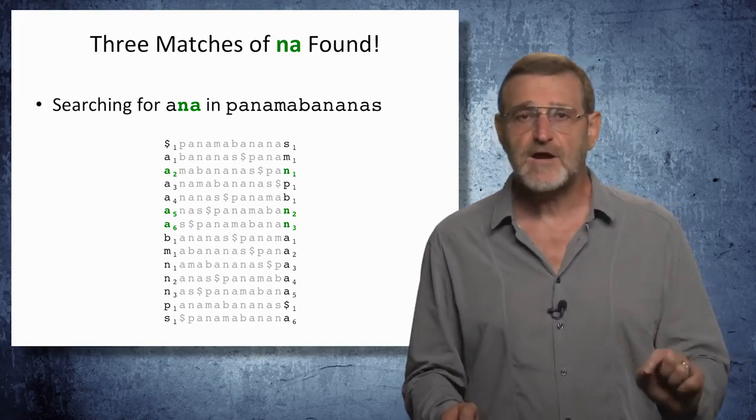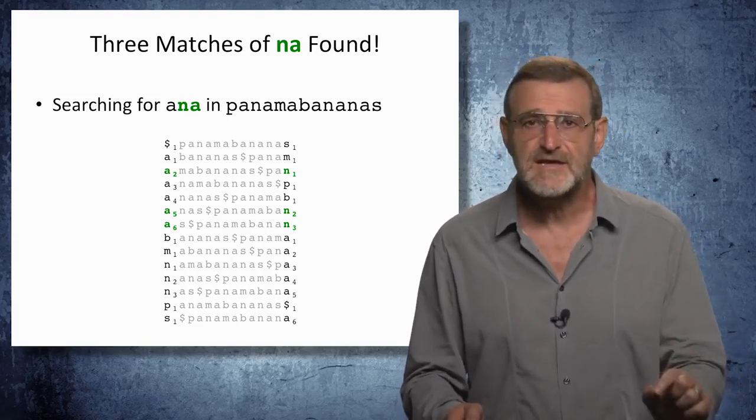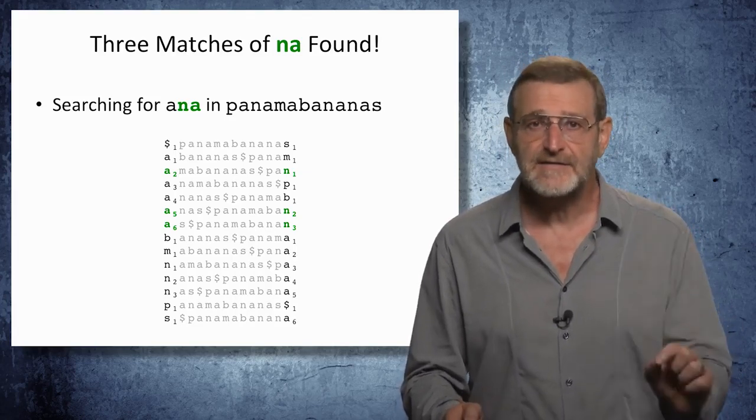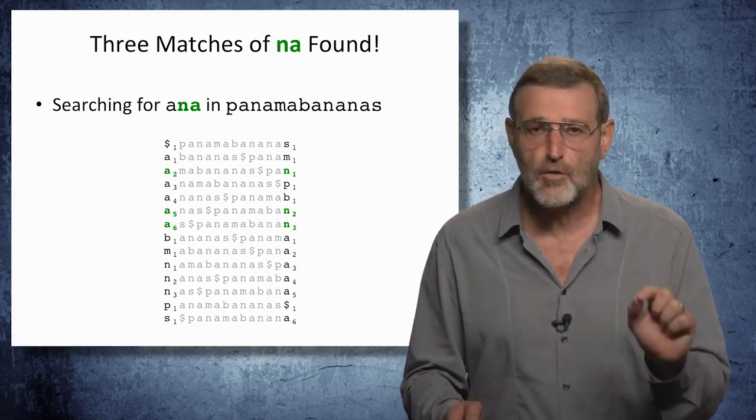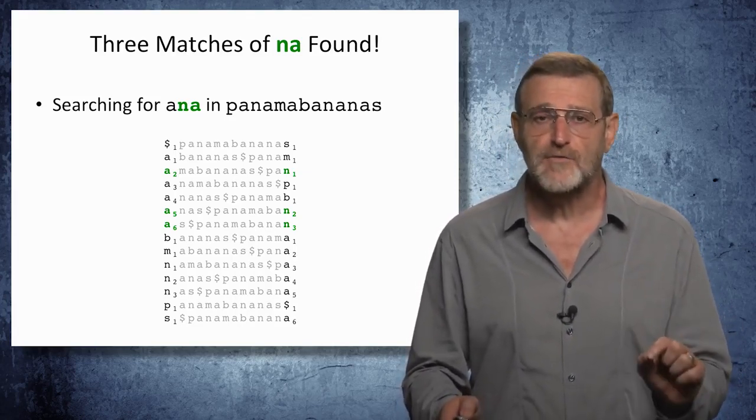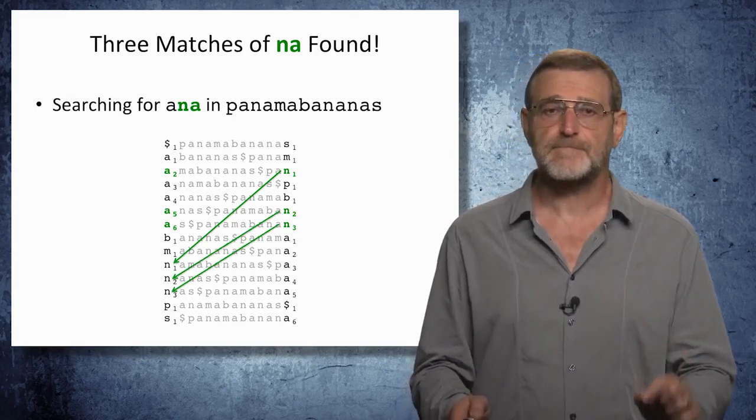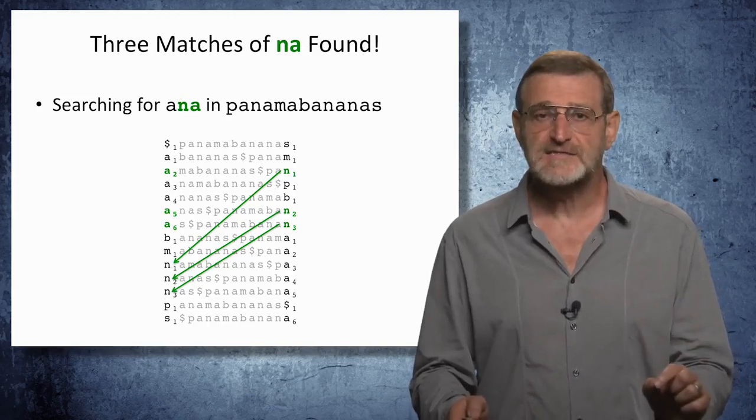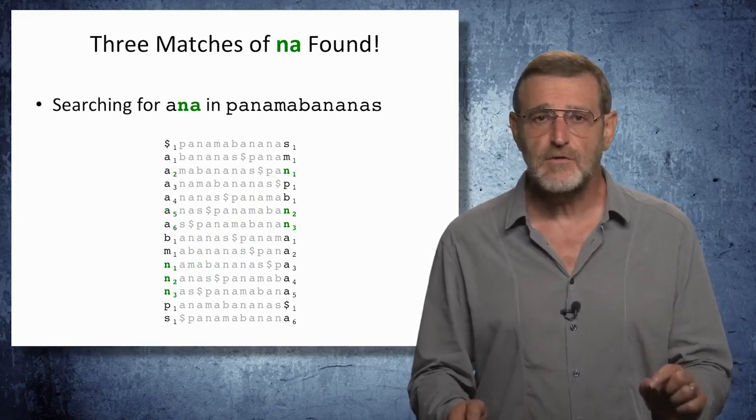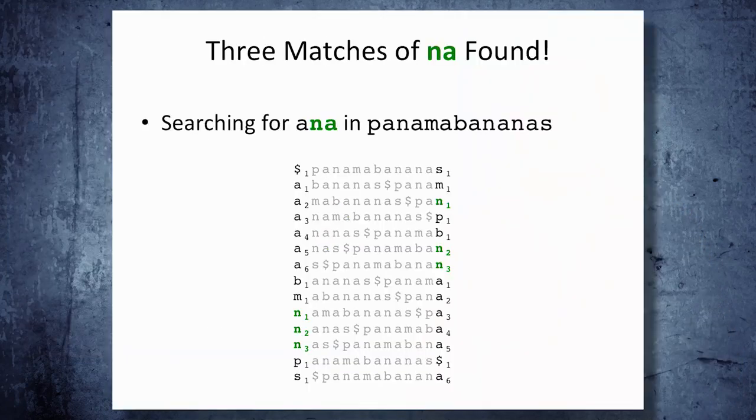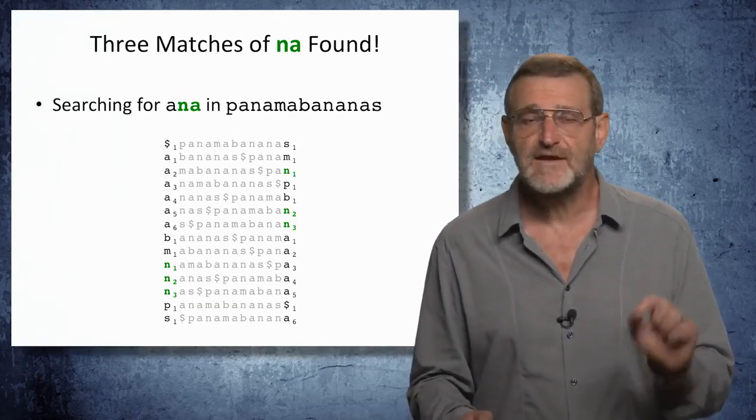We can figure out where these three Ns hide in the first column of our Burrows-Wheeler matrix. Here, here, and here. After we found where they appear in the first column, we know where 'na' appears in the string, and we actually found three matches of 'na'. This is the last two symbols in 'ana'.